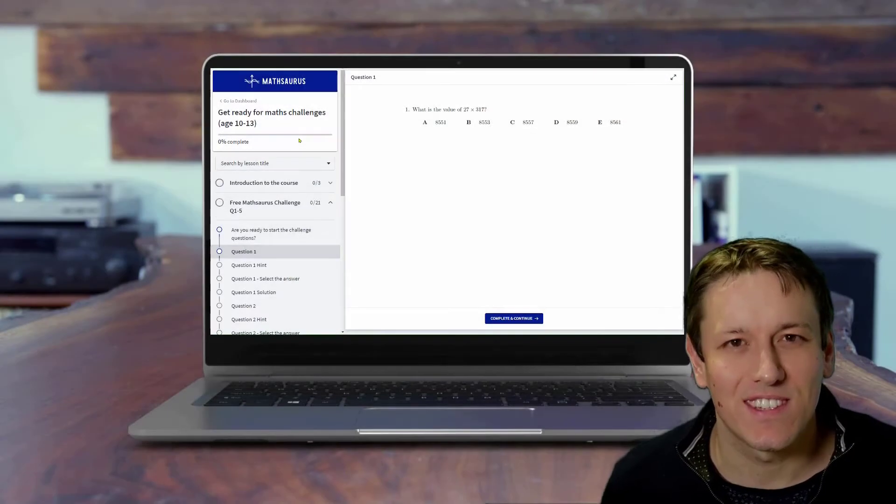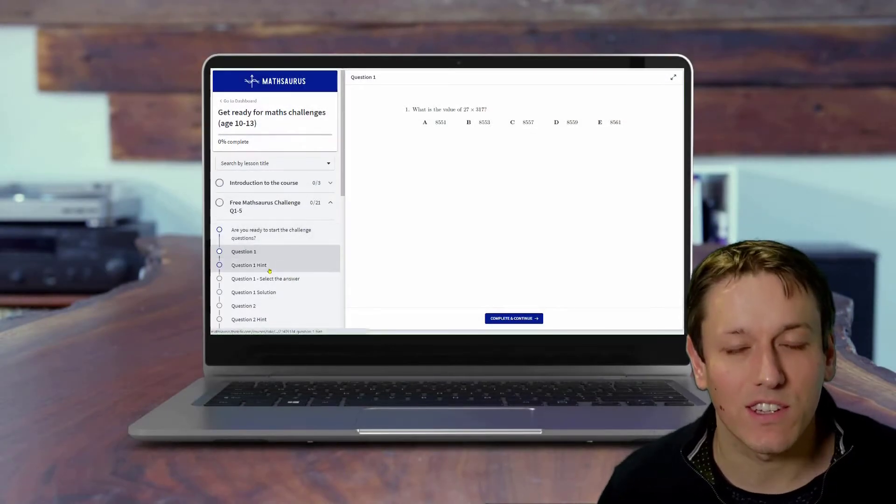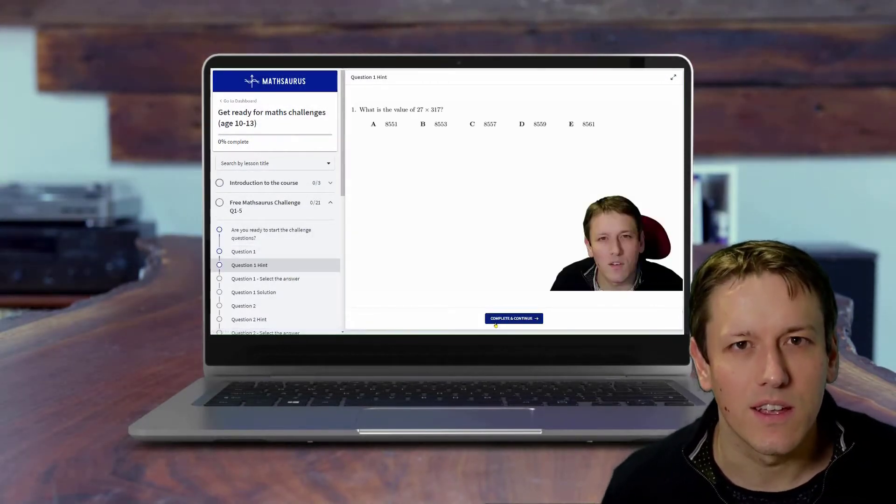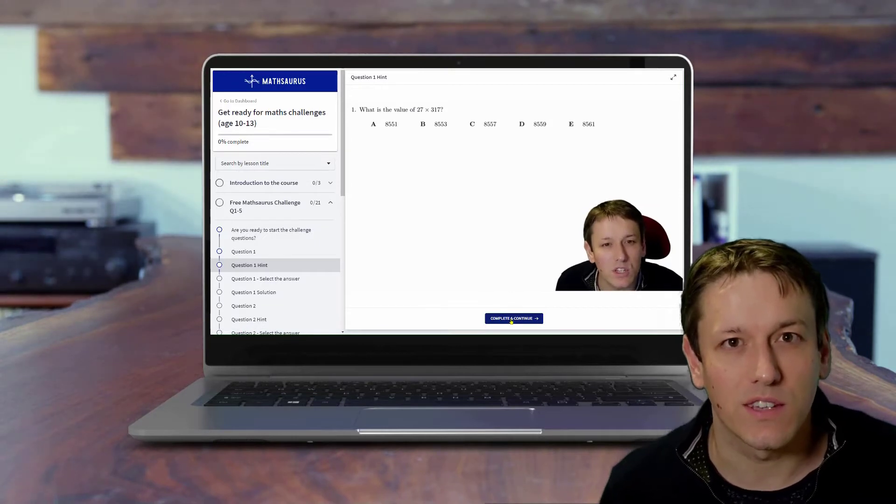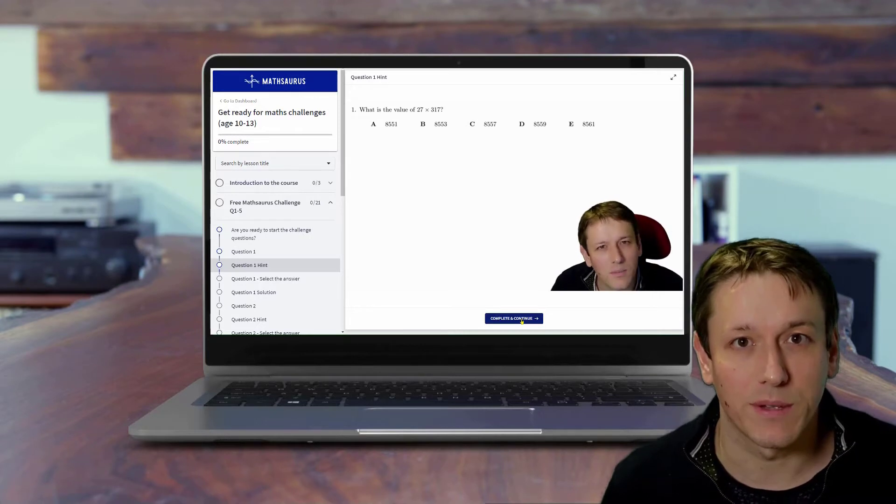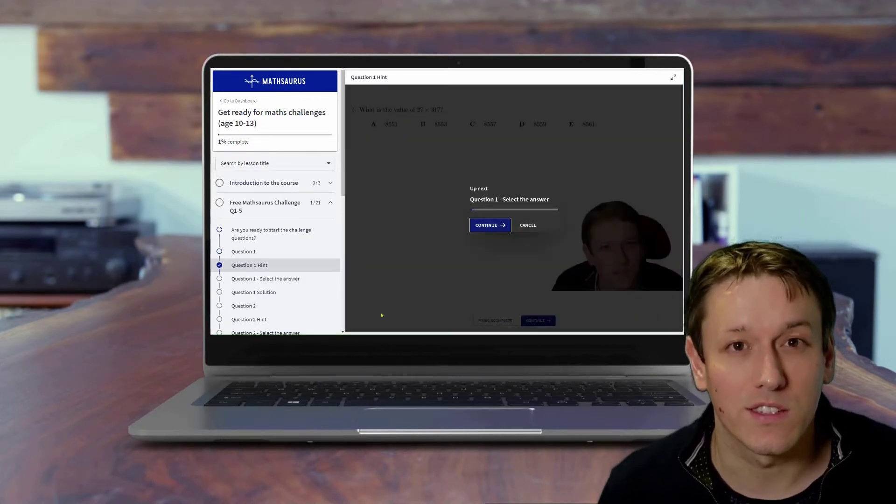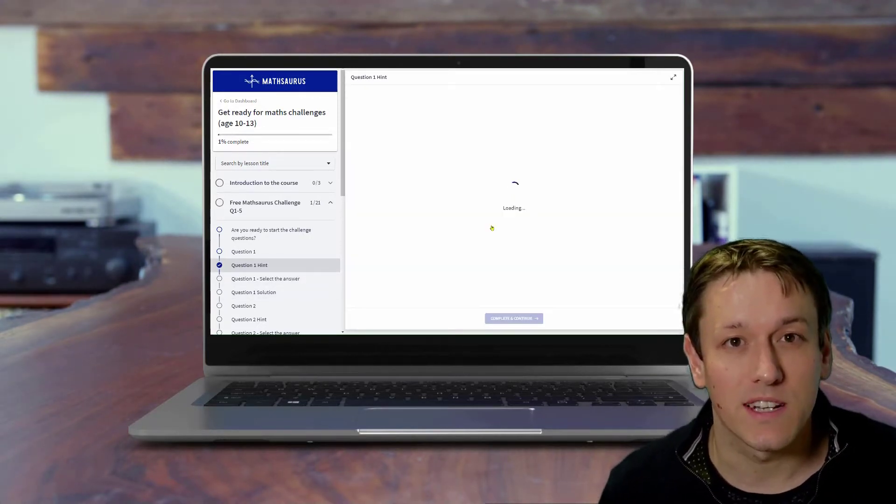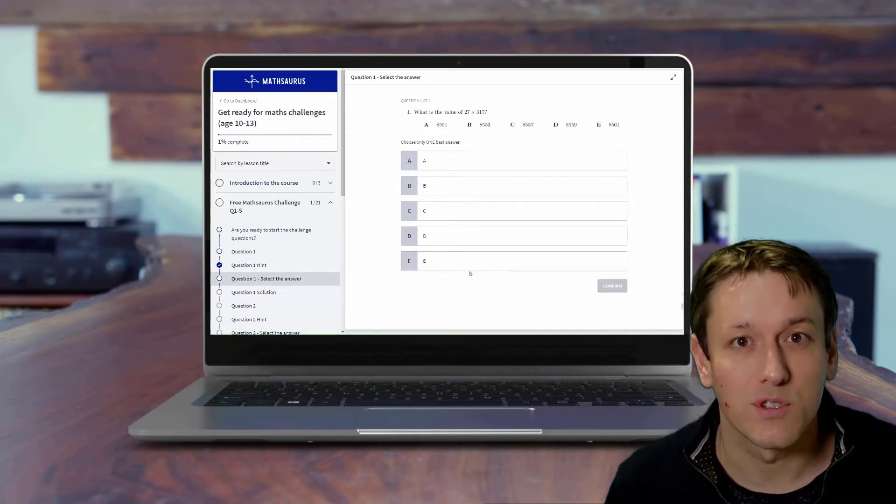For each question, you'll first see the question on the screen, so you can have a go at it and try to work out the answer. Then, if you're stuck or you want to think of different ways of solving the problem, you can watch my video hint, and then you can have another go at solving the problem. Once you think you've got the answer, you can choose the answer from a selection of multiple choice options on the screen.